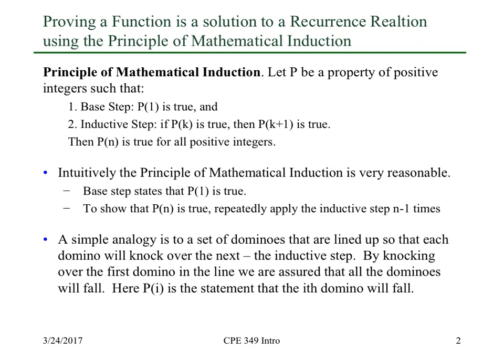Intuitively, all this means is you've got P(1), and you can show P(n) is true by repeatedly applying the inductive step. So P(1) is true, then by the inductive step P(2) must be true, then P(3) must be true, then P(4) must be true, and so on. The analogy is a set of dominoes lined up so each domino will knock over the next.